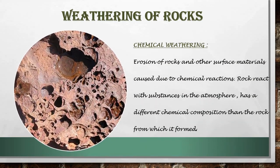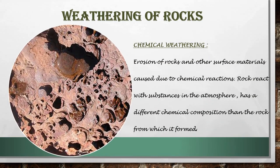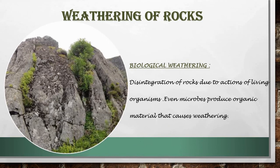The second is chemical weathering. Chemical weathering is the erosion of rocks and other surface materials caused by chemical reactions. The rocks react with substances in the atmosphere such as moisture, air, and water. The resulting substance has a different chemical composition than the rock from which it is formed. The third is biological weathering. Biological weathering is the process of disintegration of rocks due to the actions of living organisms — that is, animals, plants, microbes, etc.